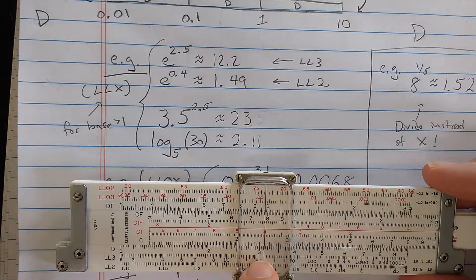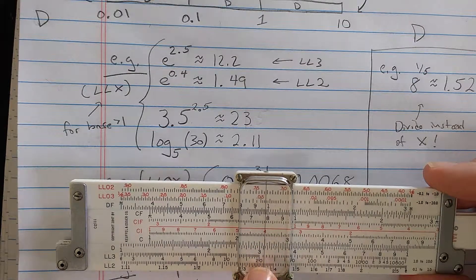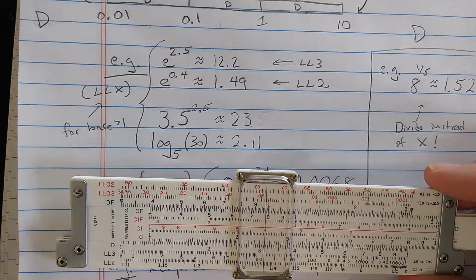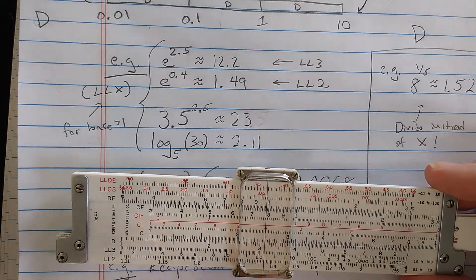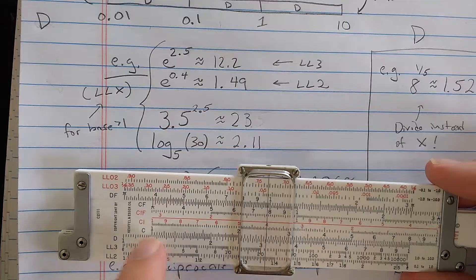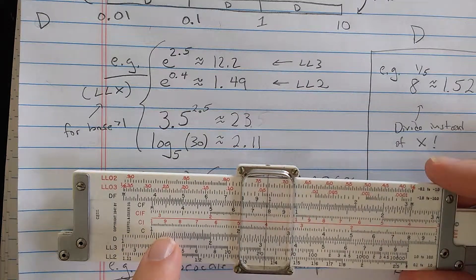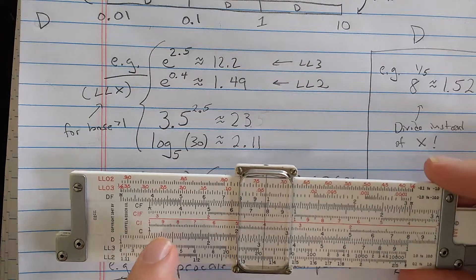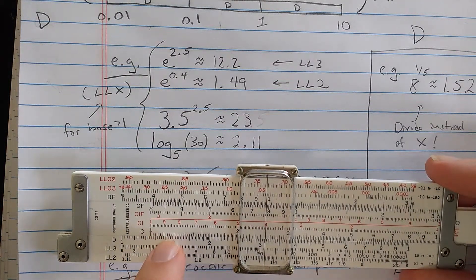And then you undo that, computing an exponential, by reading back down to the LL3 scale. So essentially, you do a change of base by doing that, and then you change back. But in log land, you do a multiplication. So Roget's idea was that in log land, you do the multiplication on the C and D scale to compute an arbitrary power.